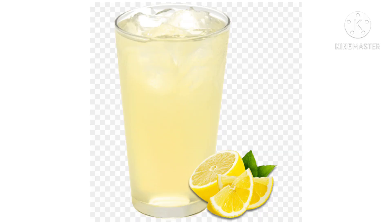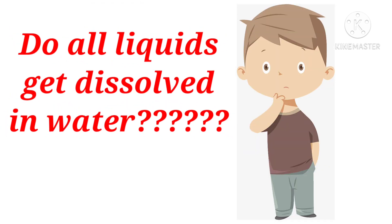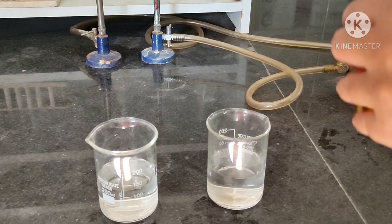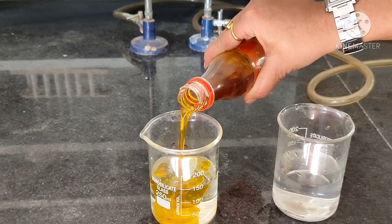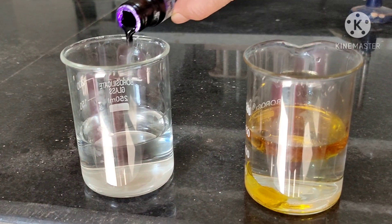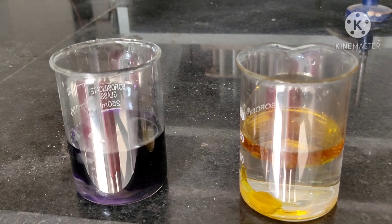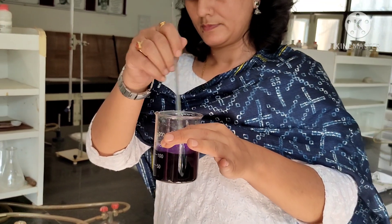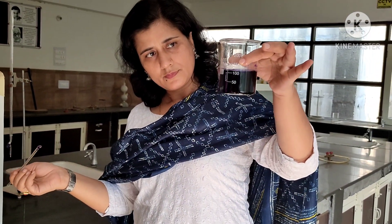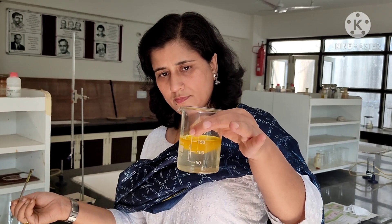Children, when we prepared neembu pani, we observed that lemon juice gets dissolved in water. Let's check this further by performing another activity. We will take two glass tumblers and fill them half with water. In one tumbler we will add mustard oil, and in the other we will add a few drops of ink. We will stir both mixtures. What do we observe? Ink dissolves in water whereas mustard oil does not dissolve.